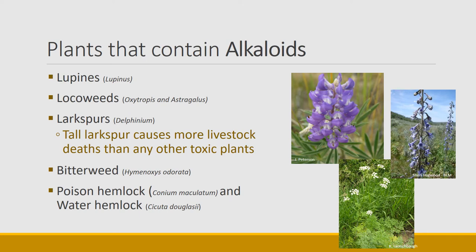Looking at plants that contain alkaloids: lupins and loco weeds contain alkaloids and are often not deadly because animals can learn to avoid them or they must be eaten in fairly high quantities. But they definitely can cause negative effects — loco weeds make animals go around in circles and look crazy and shaky. Some lupins also cause birth defects. The one most challenging for livestock producers on western lands is larkspur — tall larkspur is the plant that causes more livestock deaths than any other toxic plant in western North America.